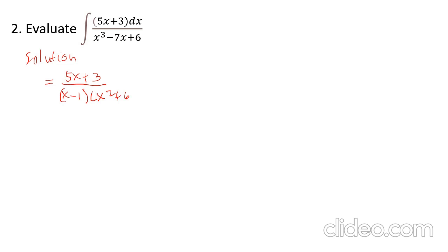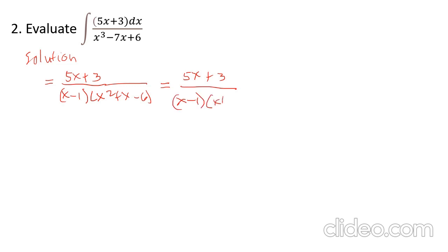This simplifies, and x minus 1 comes from the factor theorem applied to x³ - 7x + 6. Applying the factor theorem gives x minus 1 as a factor. Dividing the remainder gives (x + 3)(x - 2). So the full factorization is (x - 1)(x + 3)(x - 2).